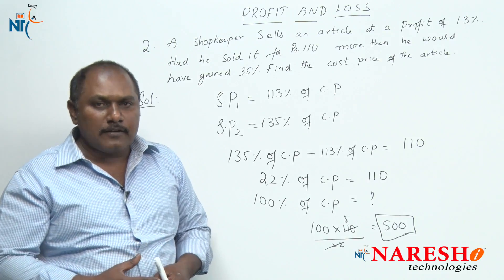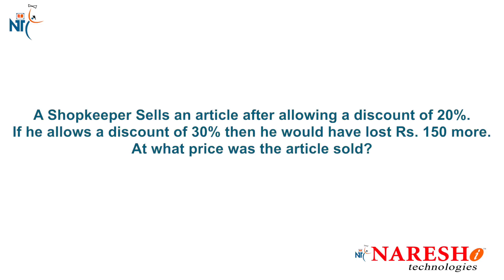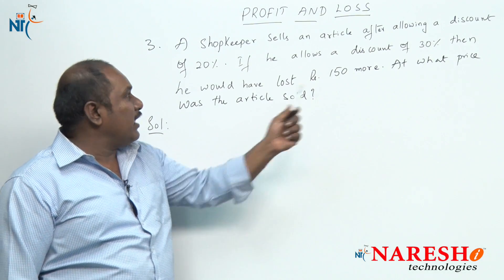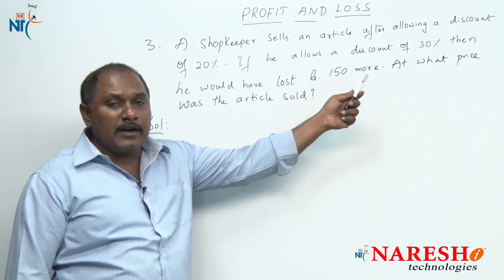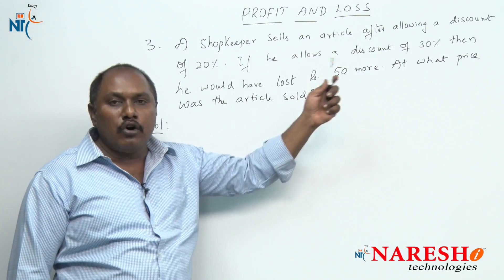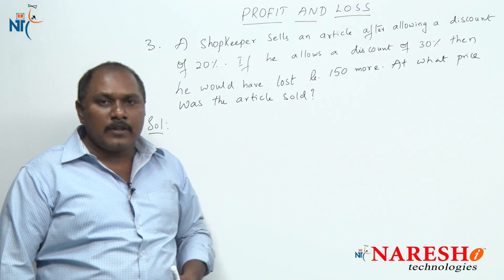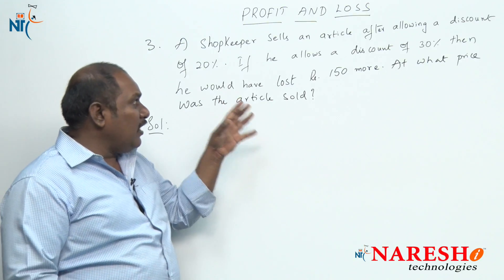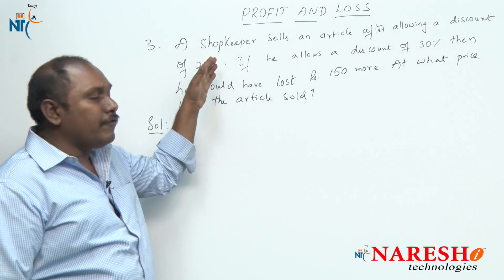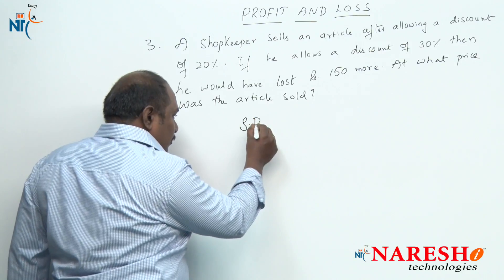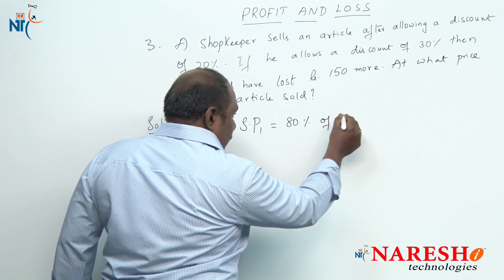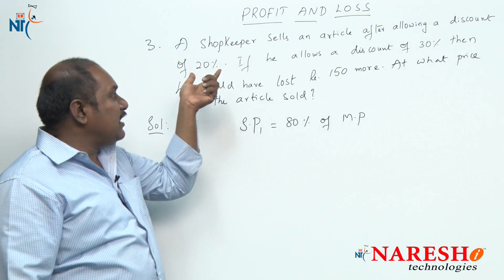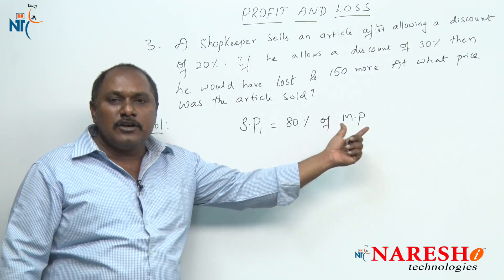Let us look at one more example. A shopkeeper sells an article after allowing a discount of 20 percent. If he allows a discount of 30 percent, then he would have lost rupees 150 more. At what price was the article sold? The shopkeeper sold the article after allowing a discount of 20 percent, meaning his actual selling price is 80 percent of marked price. Discount is always calculated on marked price.